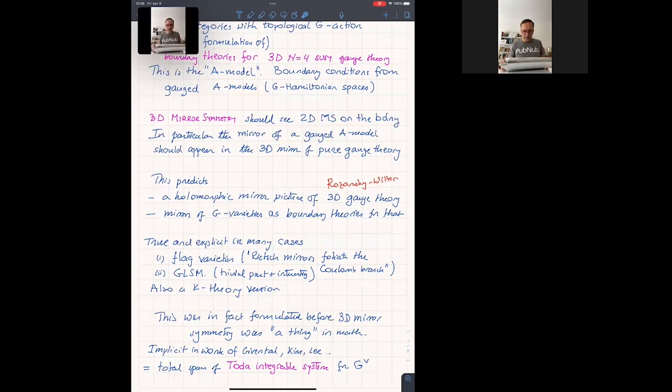So, in fact, to be a bit cheeky about that, all this was, in fact, formulated before 3D mirror symmetry became a thing in mathematics. It's actually implicit in the work of Ginzburg, Kim and Lee. They didn't spell it out. Some of the language wasn't there, and the complete picture certainly wasn't there. So one could say, a little bit cheekily, this post-dicts, because actually all of this was certainly spelled out before mathematicians were talking about the subject.